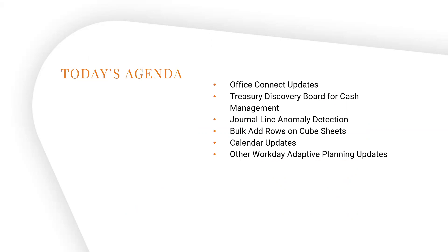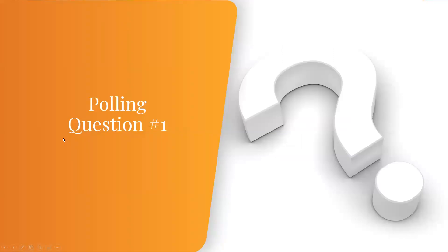The agenda today covers: first, the Workday and Adaptive conjoined release — both what's coming and the strategy for thinking about these releases now and in the future. Then we'll dive into Workday Financial-specific release items, and then pivot to Adaptive-specific release items. Please drop questions in as we go through. We're going to start by kicking off a poll: what Workday products are you currently using? This is a multi-select — you can pick more than one.